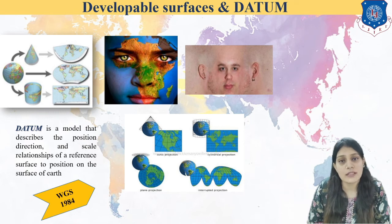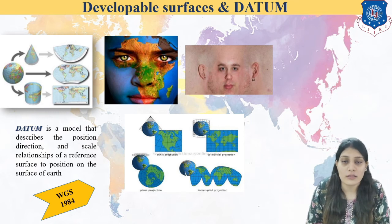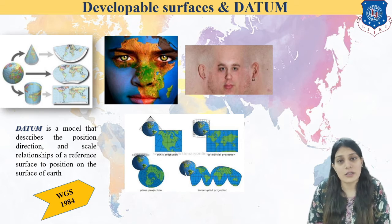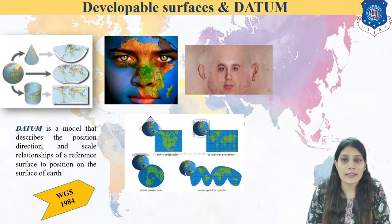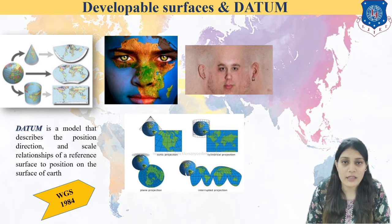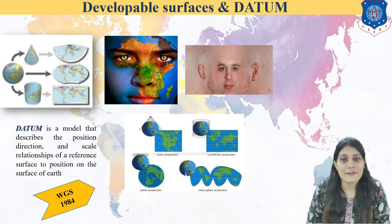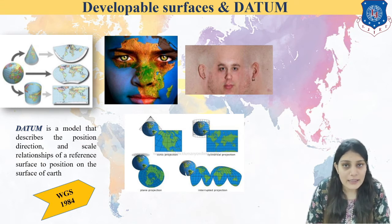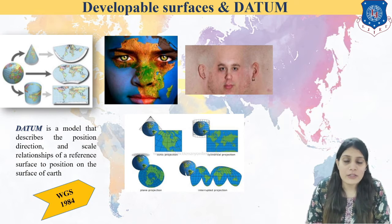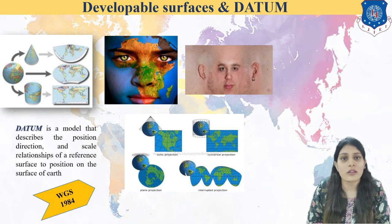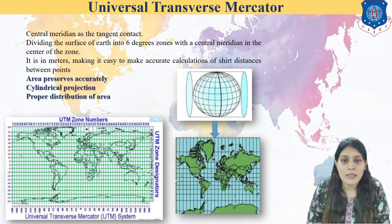For India and our continent, we are using WGS 1984 as our datum. When we are converting the surface from the globe to the flat surface, we keep one reference, and that is known as datum. So we can get the relationship and the relative position on the surface of the earth using this datum.